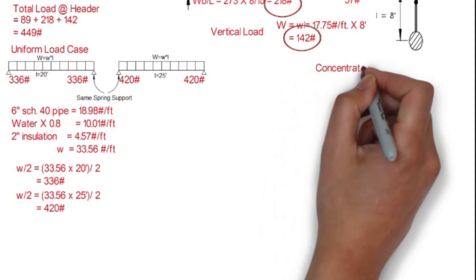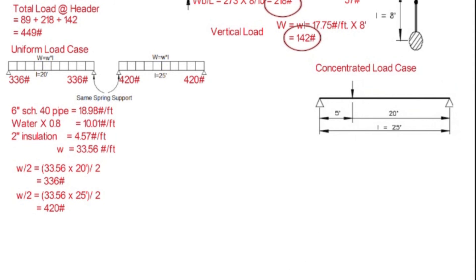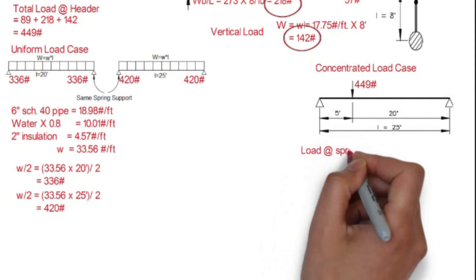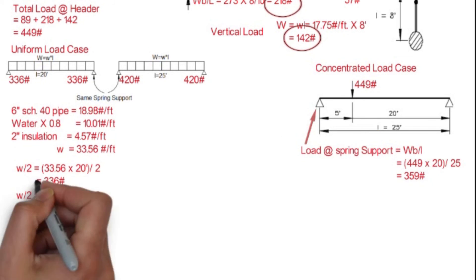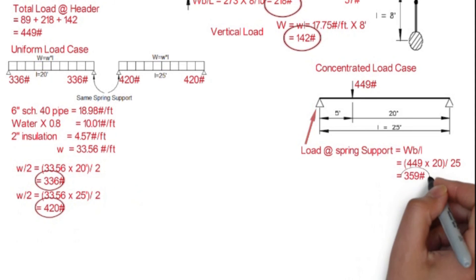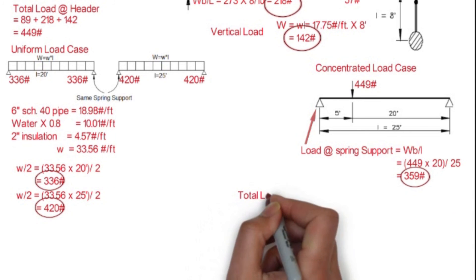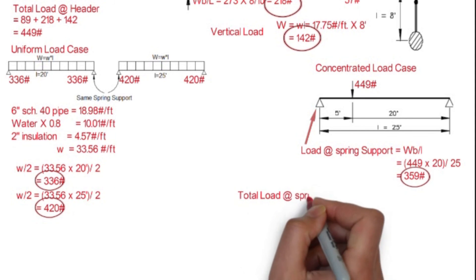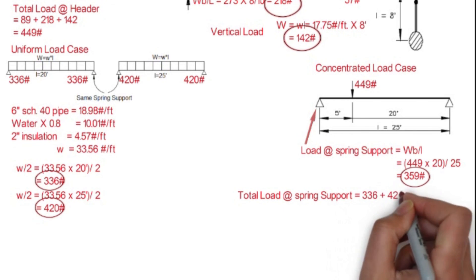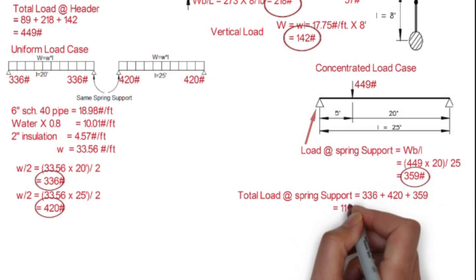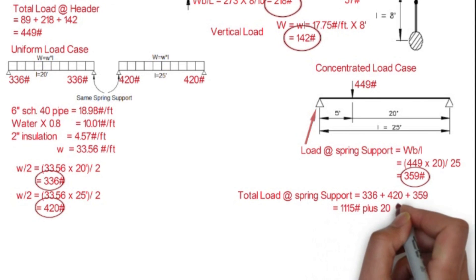We have to calculate the total load on the spring support. Similarly, for the concentrated load, we have to consider branch load as a concentrated load, so that concentrated load is 359 pounds. We have to calculate the total load on the spring support, and that will be 336 pounds plus 420 pounds plus 359 pounds, that is 1,115 pounds. And here we have to consider the 20 percent margin as we have discussed earlier, so the total load on the spring will be 1,338 pounds.